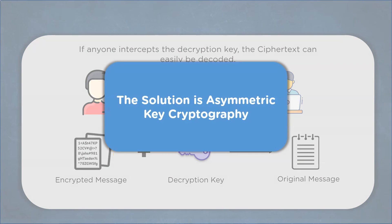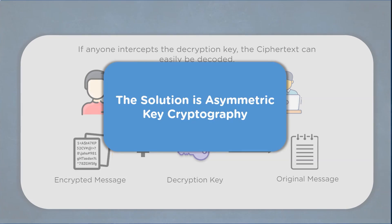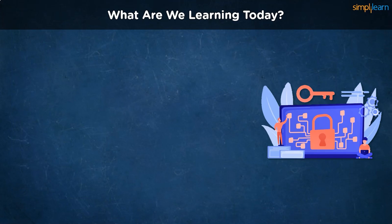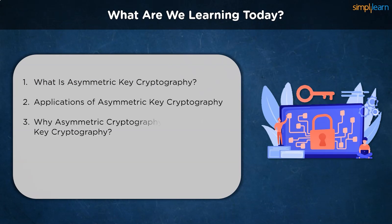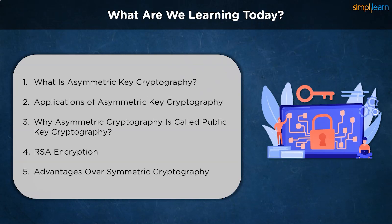Thankfully, asymmetric key encryption has managed to fix this problem. Let's take a look at what we are going to learn today. We begin by explaining what asymmetric key cryptography is and how it works. We take a look at its application and uses. We understand why it's called public key cryptography and then learn a little bit about RSA encryption. And then we learn about the advantages of asymmetric key cryptography over symmetric key cryptography.